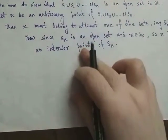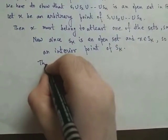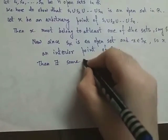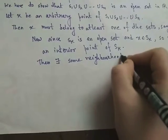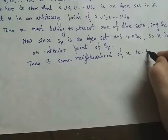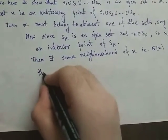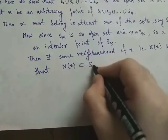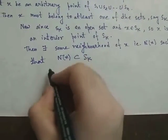Now, by definition of interior point, since x is an interior point of Sk, there exists some neighborhood of x — that is, Nx — such that Nx is contained in Sk. This is the definition of interior point.